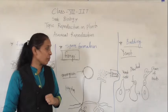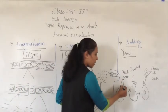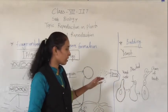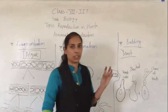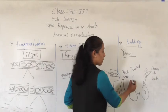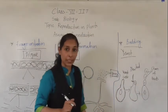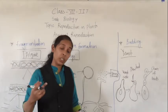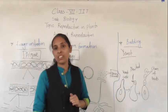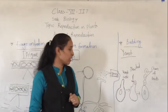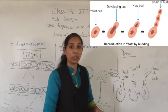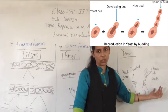How does yeast reproduce? This is a mature yeast cell. The mature yeast cell starts to form a bulge-like projection over it, which is called a bud. That bud starts to mature, and when it matures it gets detached from the yeast cell. That yeast bud then starts to grow as a new, separate individual.